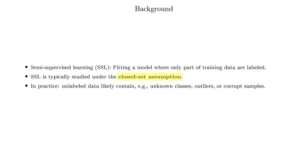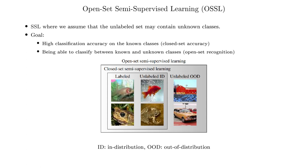However, in practice, as we do not want to manually verify all unlabeled data, it might be difficult to ensure that the unlabeled data don't contain unknown classes, outliers, or corrupt samples. Open-Set Semi-supervised Learning is a more realistic setting of semi-supervised learning where we assume that the unlabeled data may contain unknown classes. This figure illustrates this setting for image classification.